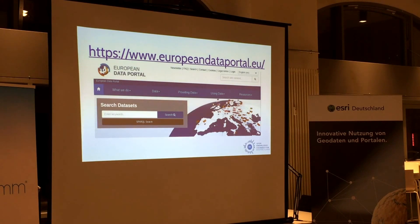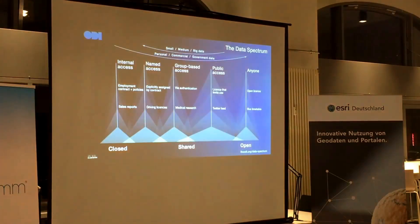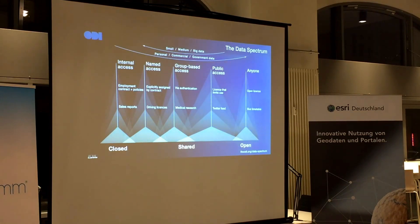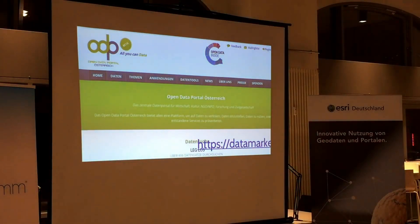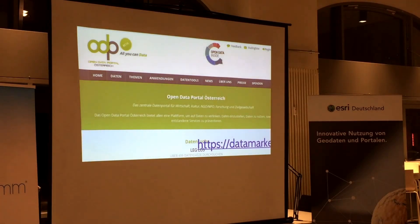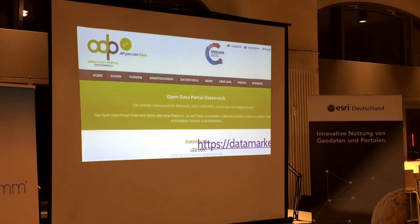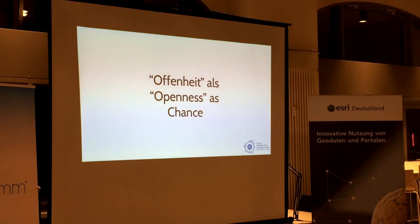That's the European Data Portal if you want to find cross-national data. I want to come back to this graphic — the data spectrum from the ODI — where you basically can choose to what degree the data should be open. You can have shared data, meaning you give somebody special access. In Austria, they have an open data portal where businesses are also pushing in data, which I think is a good step forward, because right now most of the data provided is only by government. As a business, you should consider the chance of having open data to foster your innovation.